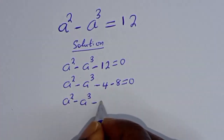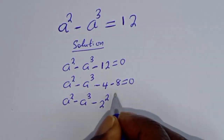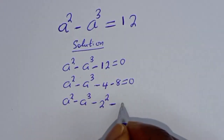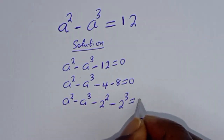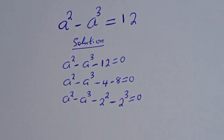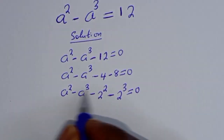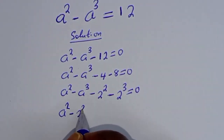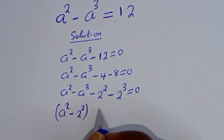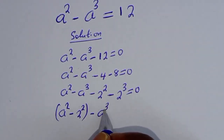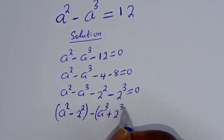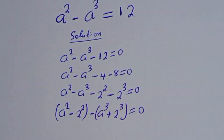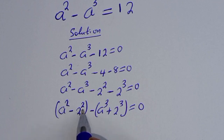We rewrite this by completing the grouping: (a squared minus 2 squared) minus (a raised to power 3 minus 2 raised to power 3) equals 0, identifying a difference of squares and a difference of cubes.